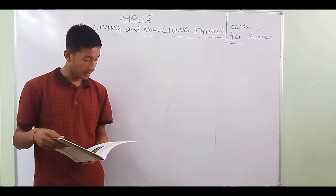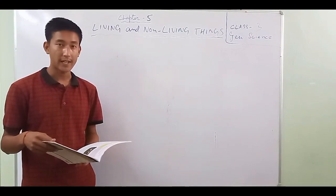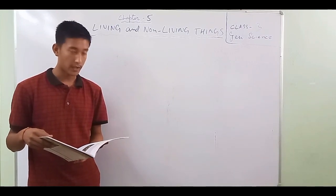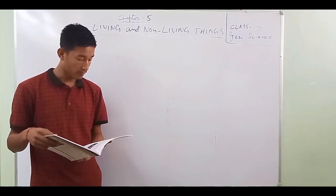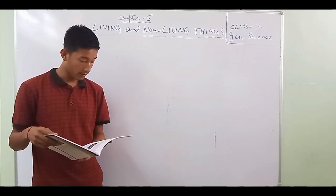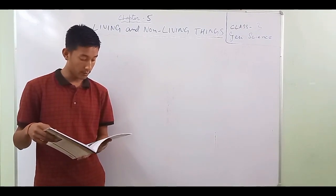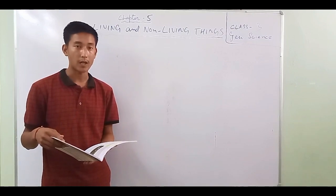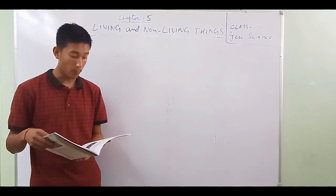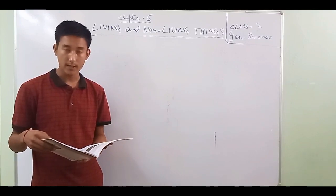Living things are different from non-living things in many ways. Here are some key points: living things move, they grow, they eat, they breathe, they feel changes around them, they produce young ones, and they grow old and die. These are the points we are going to discuss in this chapter.